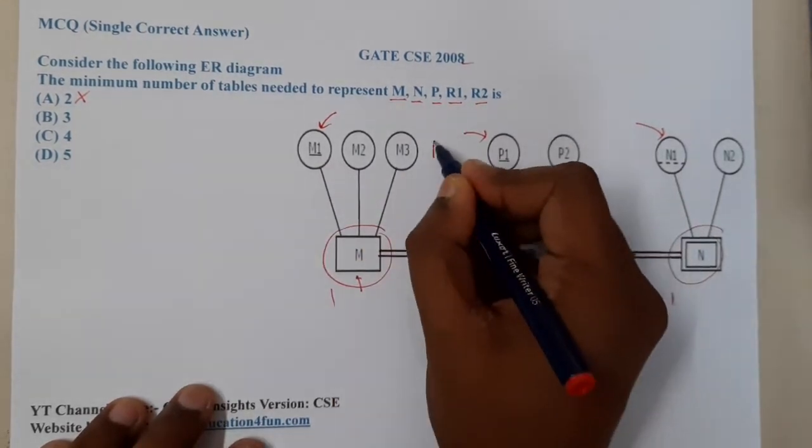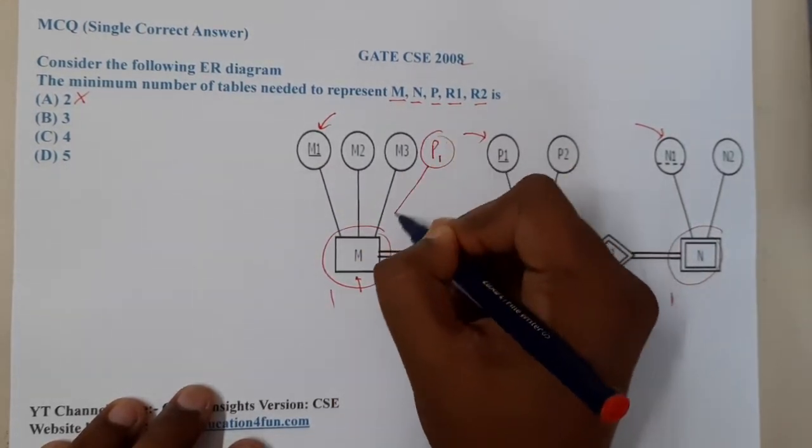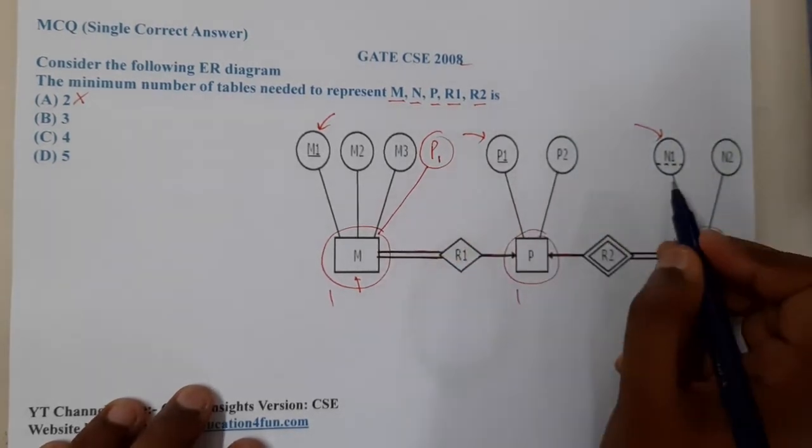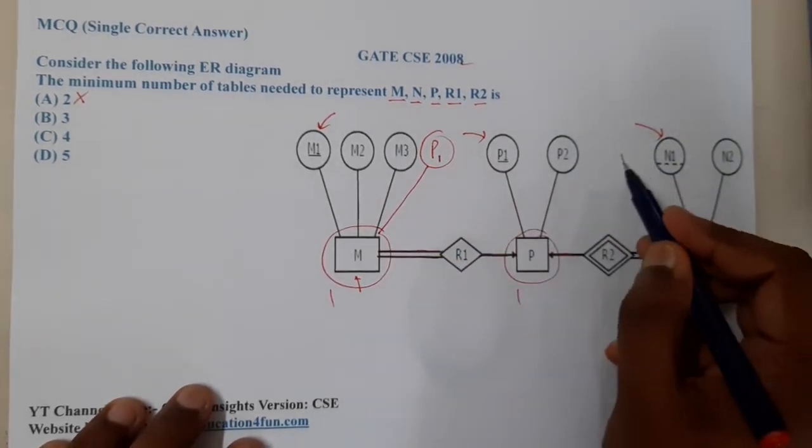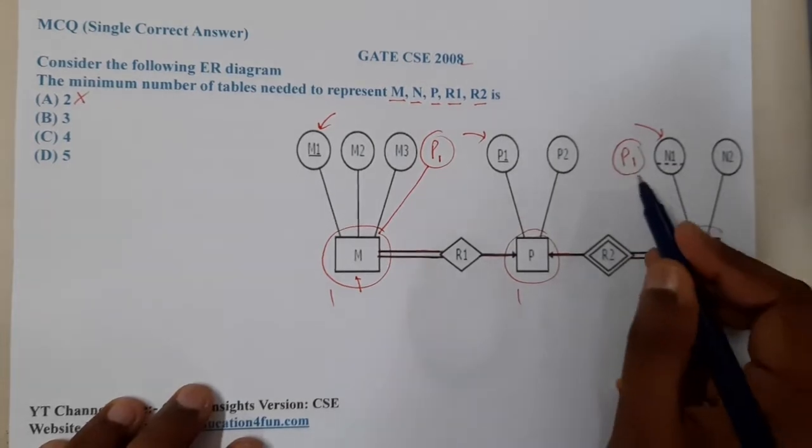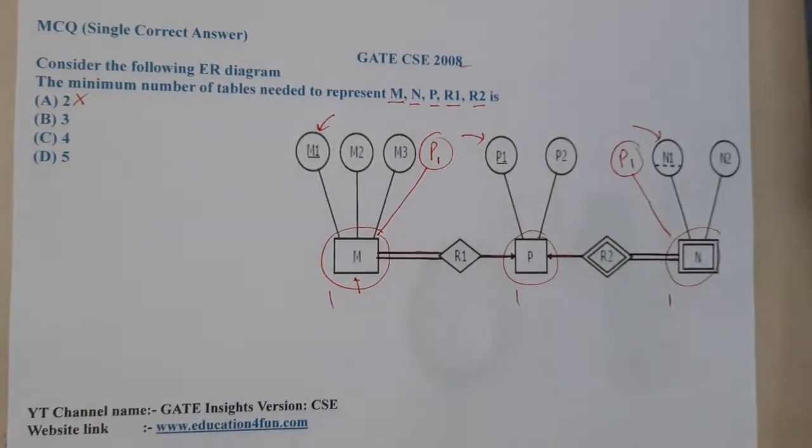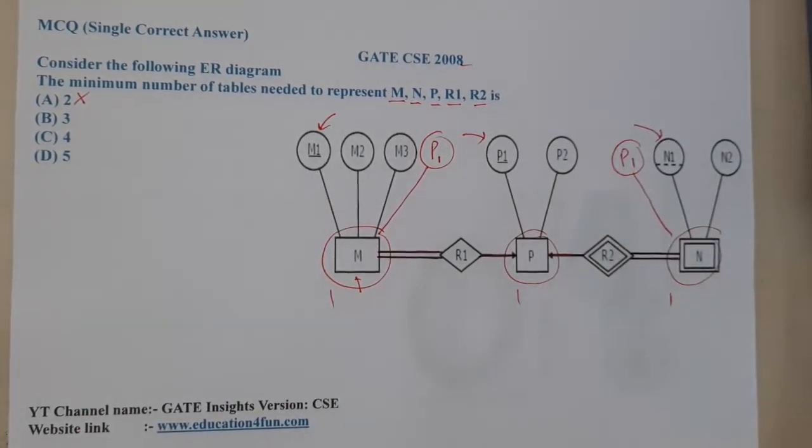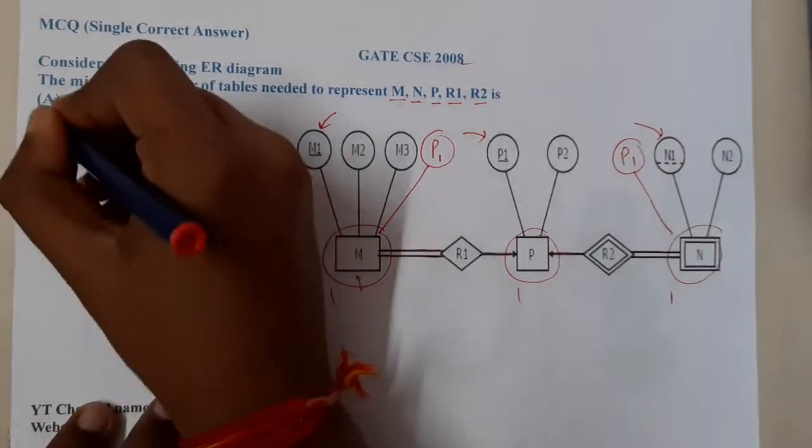Similarly on this side also I will write P1. So now this will be the final thing and a total of three tables will be enough, because there is no many to many relation here. So I think a minimum of three tables are required.